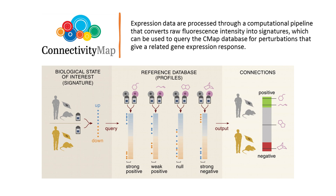High-quality data connecting drug action, genetic profiles, and diseases enable the development of novel computational approaches and models to identify new compound mechanisms of action for elucidation of side effects and drug repositioning, such as the connectivity map or CMAP. CMAP has generated a library containing over 1.5 million gene expression profiles from approximately 5,000 small molecule compounds and 3,000 genetic reagents tested in multiple cell types, using a relatively inexpensive and rapid high-throughput gene expression profiling technology. Expression data are processed through a computational pipeline that converts raw fluorescence intensity into signatures, which can be used to query the CMAP database for perturbations that give a related gene expression response.